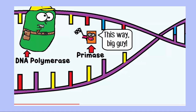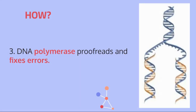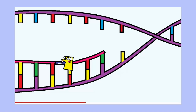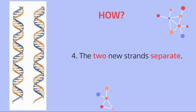DNA polymerase gets help from another enzyme called primase. Primase's job is to place short starting sequences on the unzipped DNA so that DNA polymerase knows which nucleotide base to attach. It's also important to know that while DNA polymerase is adding nucleotide base pairs, it is also proofreading and fixing any errors — checking whether each base pair belongs and correcting mistakes before moving on.